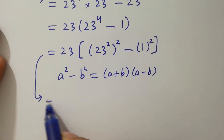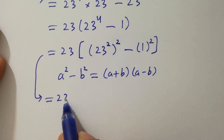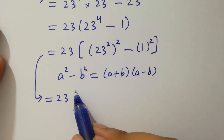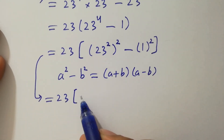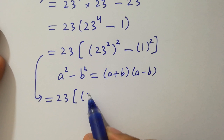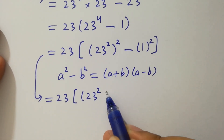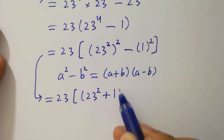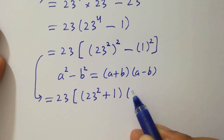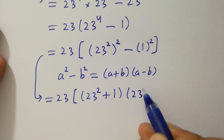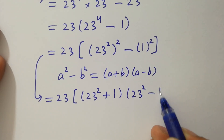It will be 23 times (23 squared plus 1) times (23 squared minus 1).